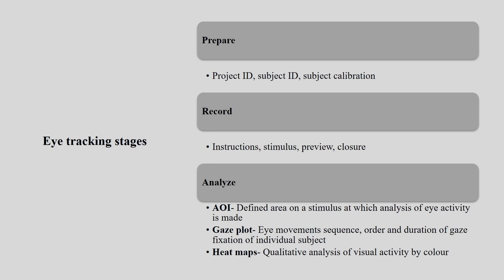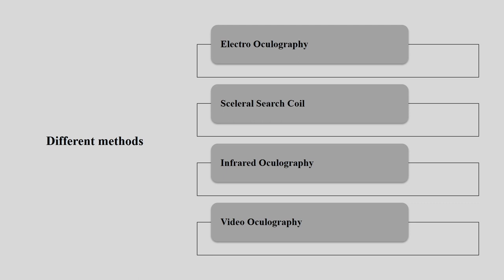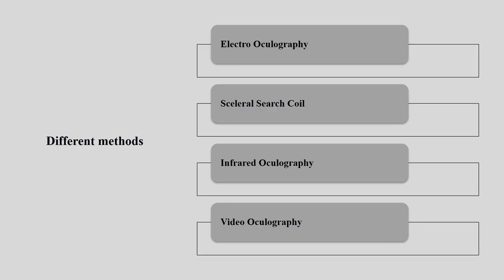Heat map is very important — it is qualitative data providing qualitative analysis of visual activity by color: red means highest amount of attention, yellow is lesser than red, and green is the least amount of attention. There are four types of eye tracking methods available: electrooculography, scleral search coil, infrared oculography, and video oculography. Based on your system availability, you can choose any one of them.